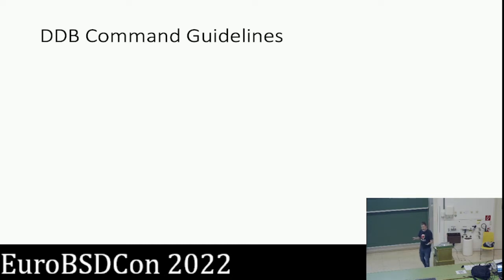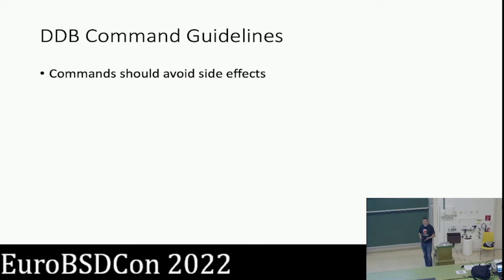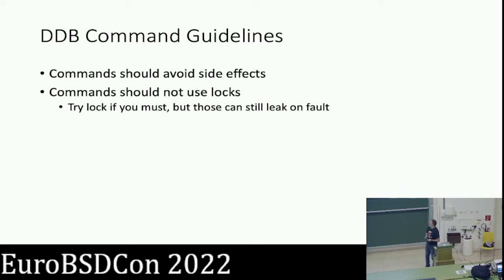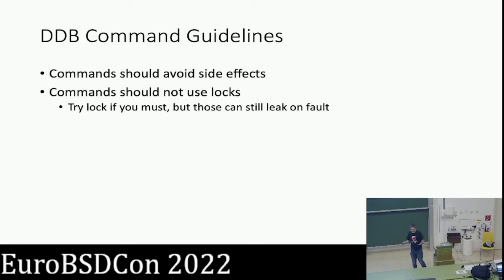As a result of these rules, there are some best practices to follow when writing a command. First, you should really try hard to avoid side effects — going back to the longjmp issue, there's no good way to recover if things go sideways while walking a trail of pointers. You also really should not use locks, because if you lock something and then fault, you're going to leak the lock since you won't have a way to recover and unlock it.